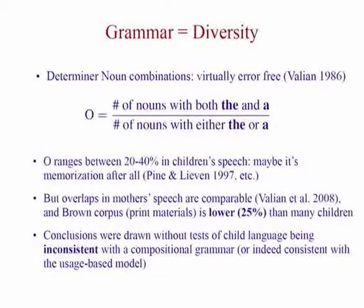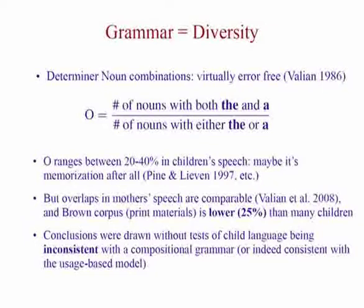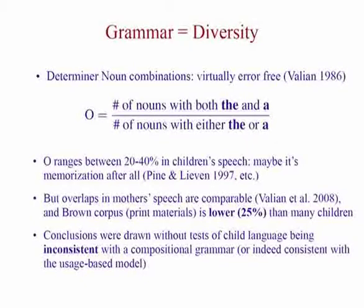Here's the basic intuition behind the usage-based idea: to equate the use of grammar as some sort of diversity of expressions that grammar could give you. Here's a concrete measure. Determiners are interesting because children almost never make mistakes with them. You take a measure of diversity as a ratio: take the total number of nouns that appear with either 'the' or 'a', and then take the number of nouns that occur with both. The count you see is only about 20 to 40 percent for kids.